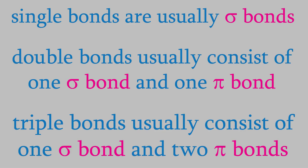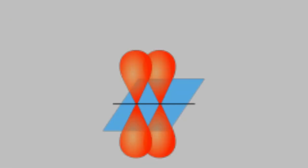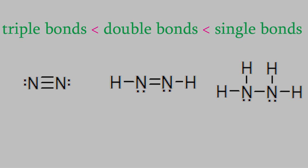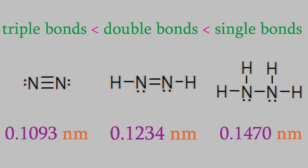As you might have noticed, in order to have a pi bond, the atoms have to be pretty close to one another so that the p orbitals on each atom can overlap. That means a triple bond is usually very short, while double bonds are a bit longer, and single bonds are the longest. That turns out to be very true. If we compare these three molecules, one has a nitrogen triple bond, one has a double bond, and one has a single bond. Just as we predicted, the triple bond is the shortest at 0.1093 nm, and the single bond is the longest at 0.1470 nm.